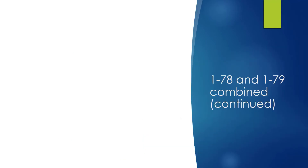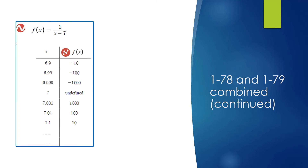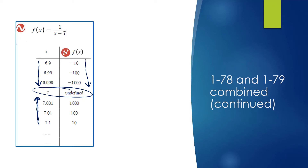I want to examine the behavior of y near the asymptote. As x approaches 7 from the left — going from 6.9 to 6.999 — the y-value heads toward negative infinity. As x approaches 7 from the right, the y-value heads toward positive infinity. We call this infinite discontinuity, meaning there is a break in the graph.